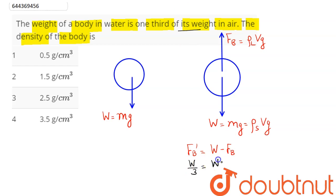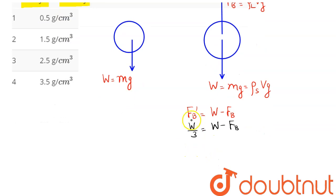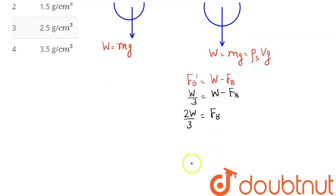Hence this comes as W minus, we can say, as Fb. So here we can say in water means density of water will be one, so we can say here this comes out to be 2W by 3 is equal to buoyancy force. So we can say here this comes as two by three, your weight is equal to ρs into V into g, and your buoyancy force equals to ρl into V into g.